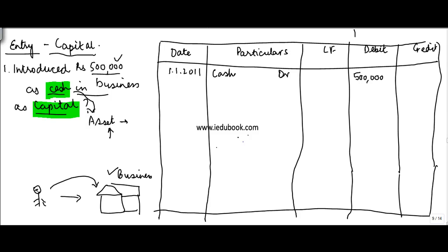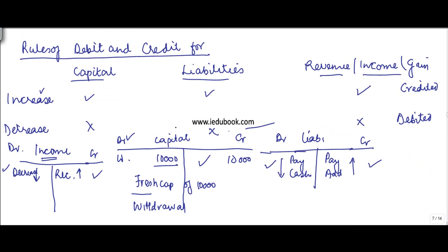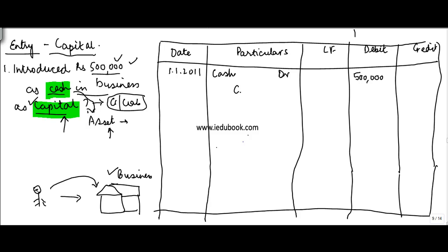So I debit cash — how much? Five lakh. In the debit column I put in five lakh as the debit amount. The second account is capital. Capital is a capital account — you can also call it a credit account or a liability account. From the business perspective, capital is also increasing by five lakh. We saw earlier that an increase in a capital account is credited.